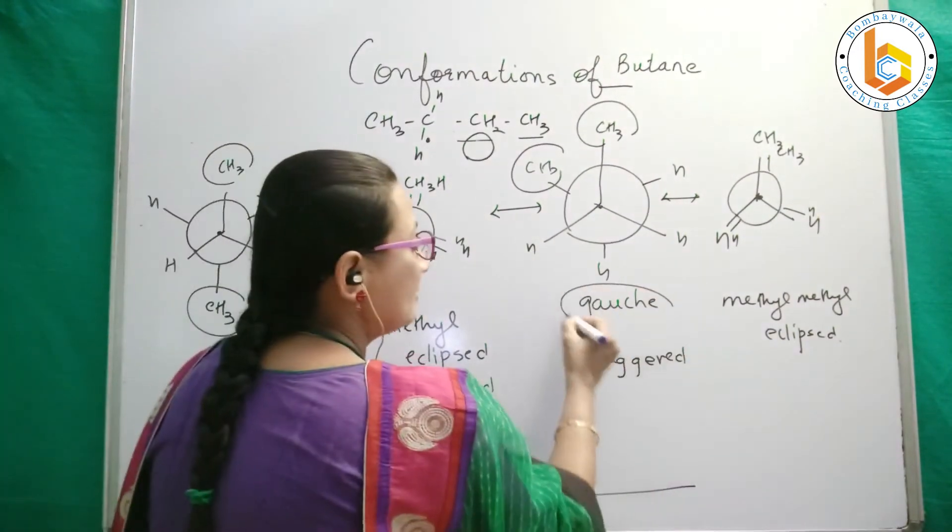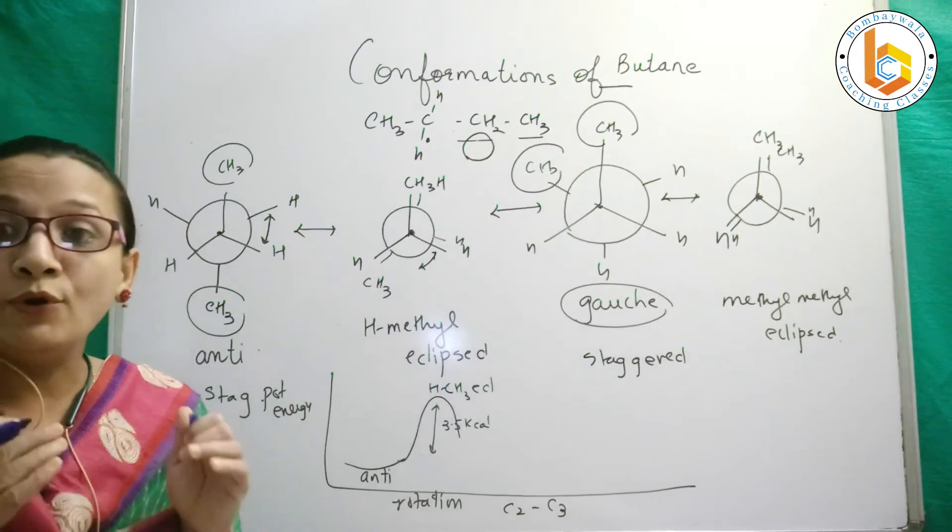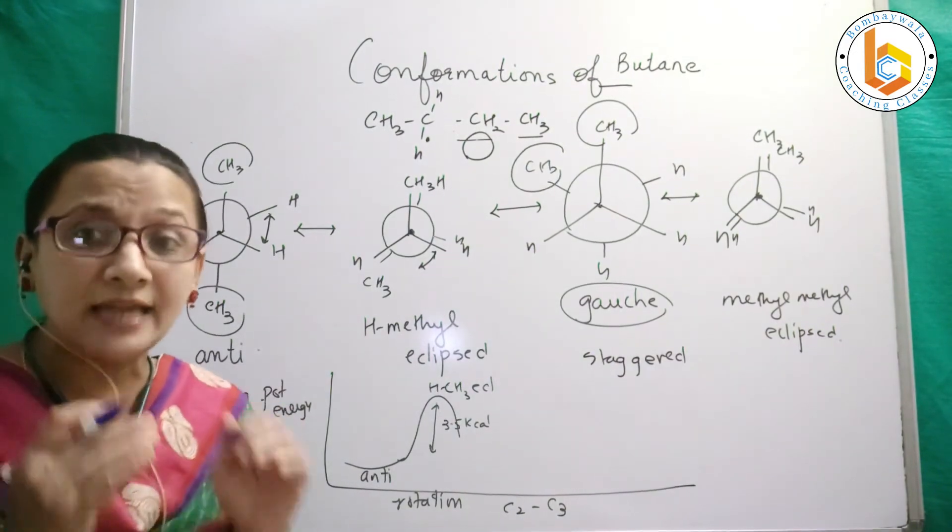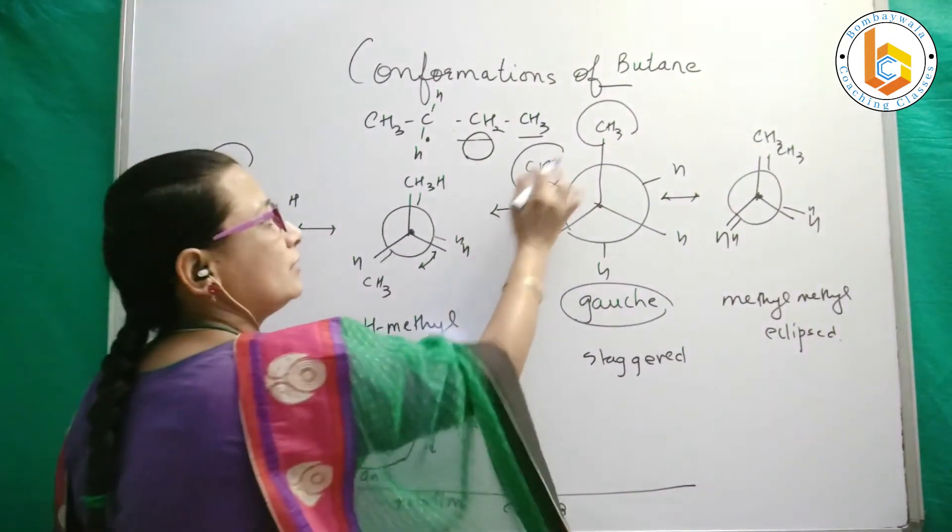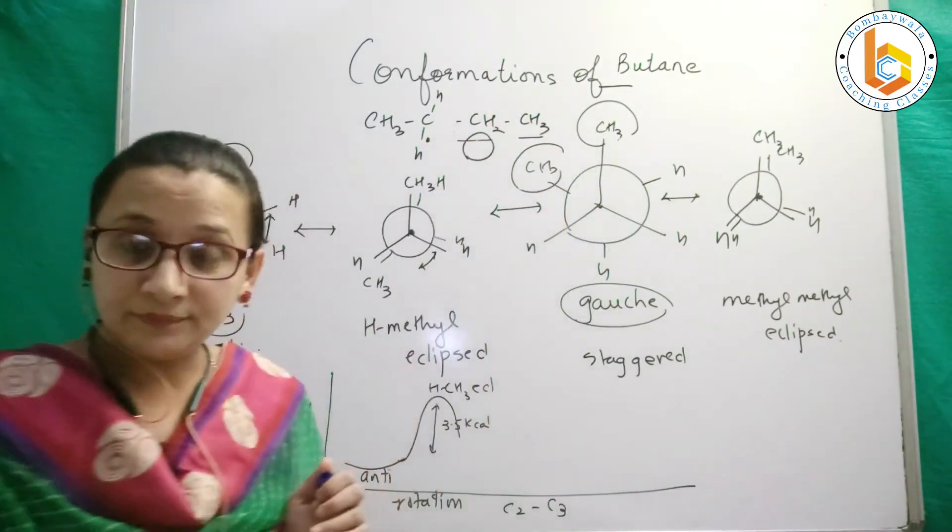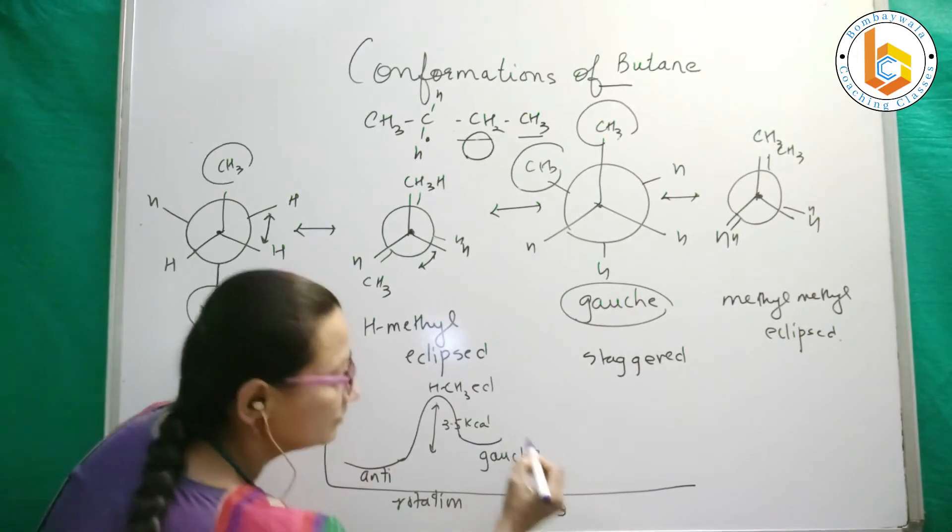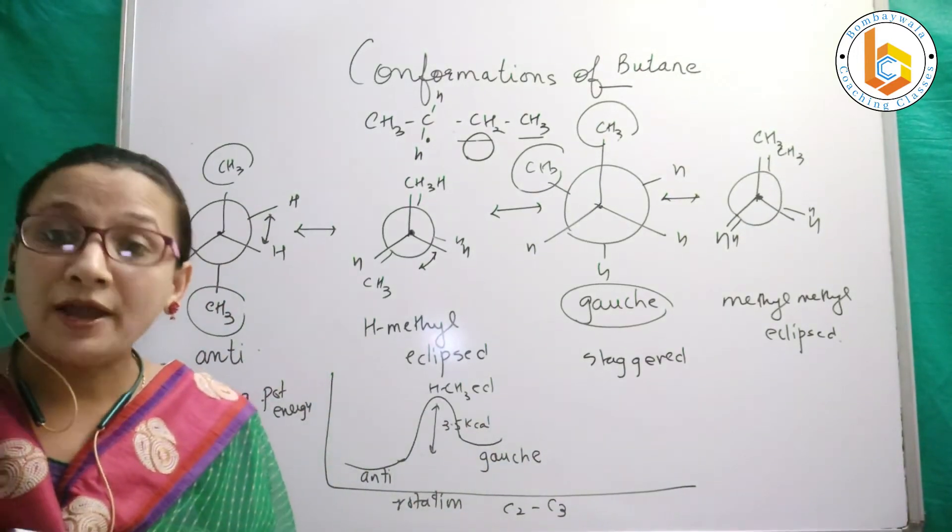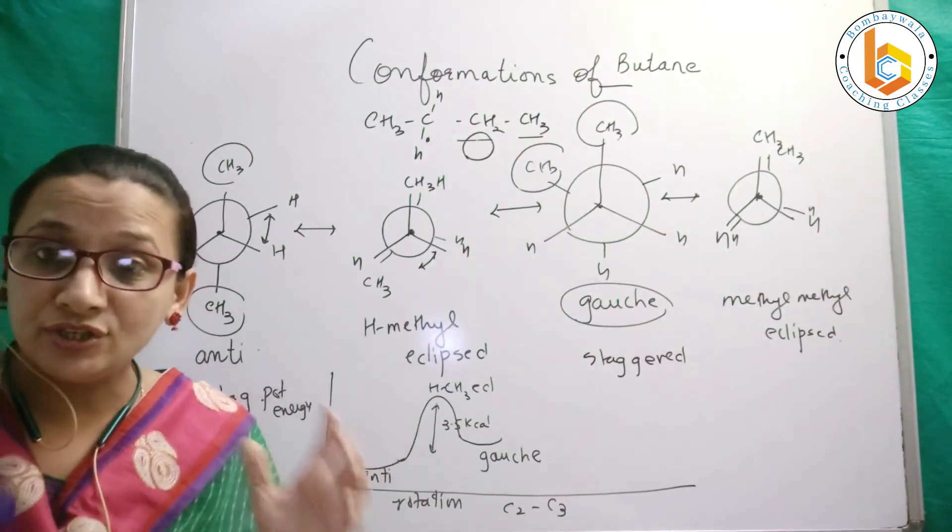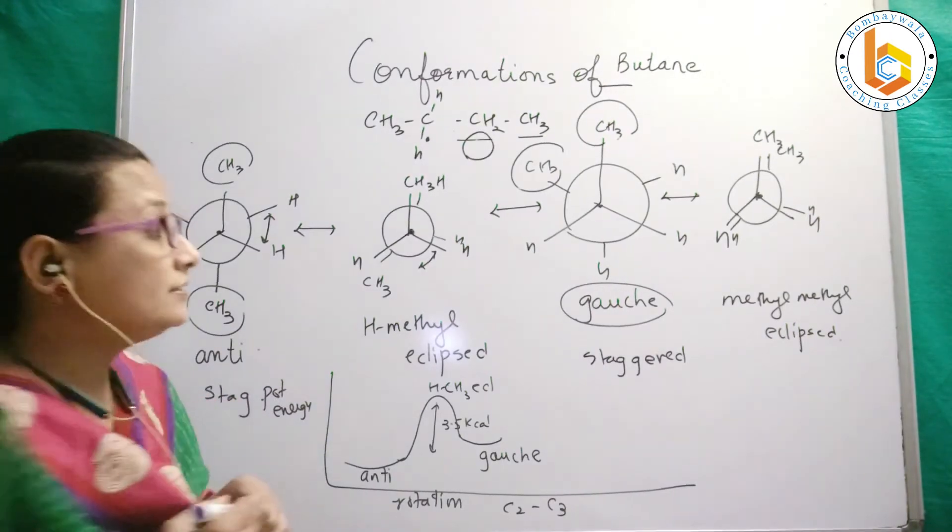Though it is staggered, the methyl groups are comparatively closer, hence the energy is somewhere here. This is gauche. Finally, the most energetic and the most unstable is methyl methyl eclipsed.